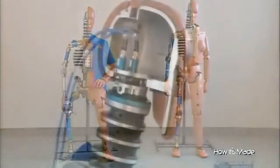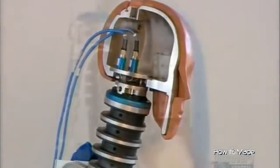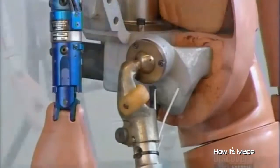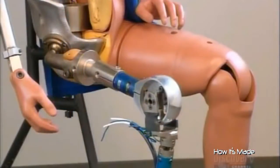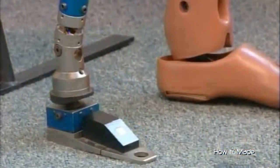A dummy's anatomy is pretty simple. There's a metal skeleton made of steel and aluminum bones. Those bones contain load cells, electronic devices that measure crash force. On the outside, the dummy's skin consists of a vinyl covering.